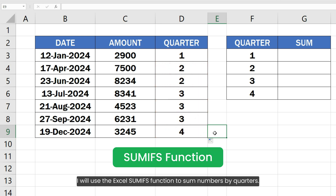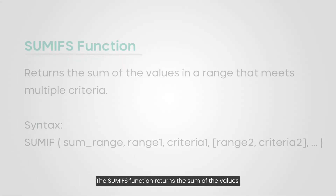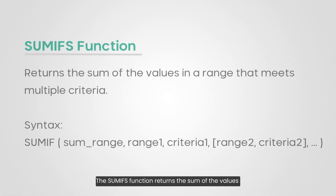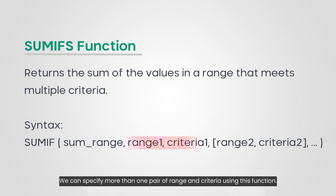I will use the Excel SUMIFS function to sum numbers by quarters. The SUMIFS function returns the sum of the values in a range that meets multiple criteria. We can specify more than one pair of range and criteria using this function.